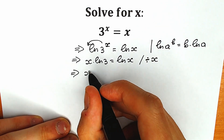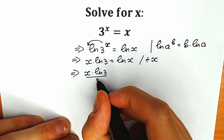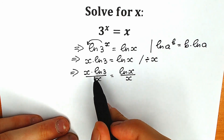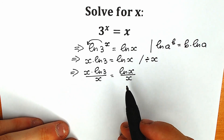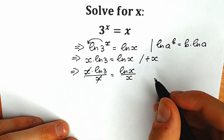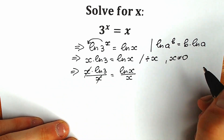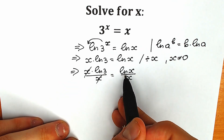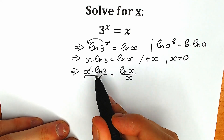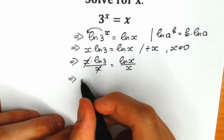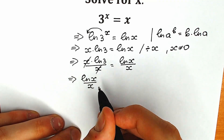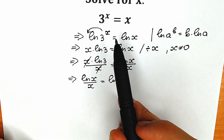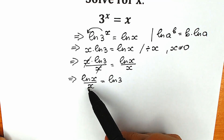As a result, we have x times natural log 3 divided by x equal to natural log x divided by x. We can cancel this x, of course — x is not equal to zero, which is extremely important. Now let's change position and write natural log x over x on the left side and natural log 3 on the right side. So we have natural log x over x equal to natural log 3.